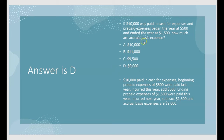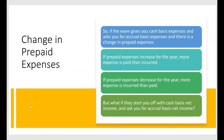Notice prepaid expenses went up from $500 to $1,500. When prepaid expenses goes up, it means you paid more this year than what was incurred as an expense this year — cash basis expenses were higher than accrual basis expenses. Whenever prepaid expenses goes up for the year, cash basis expense is higher than accrual basis expense. Let's review prepaid expenses.